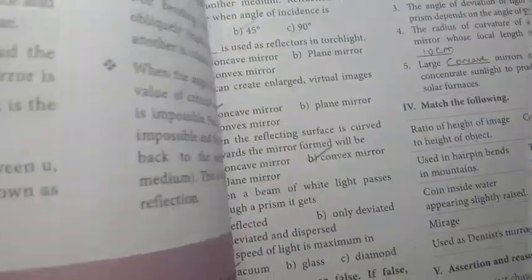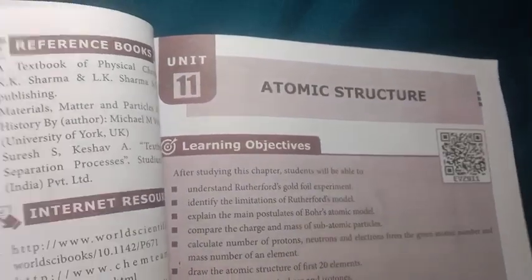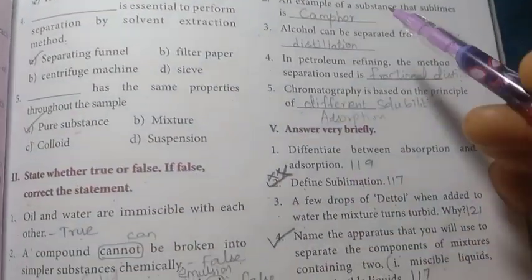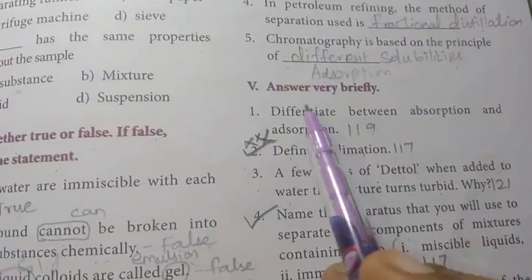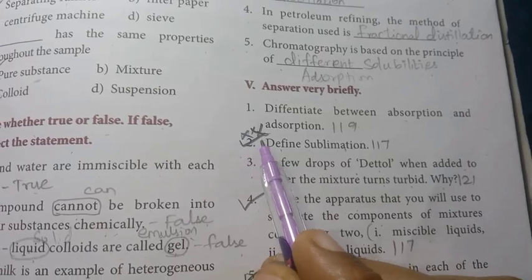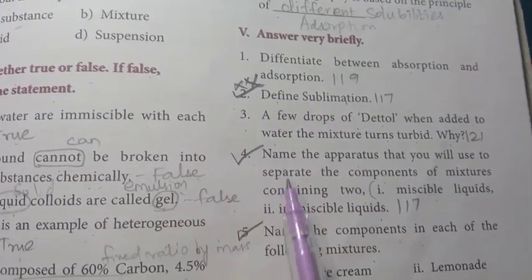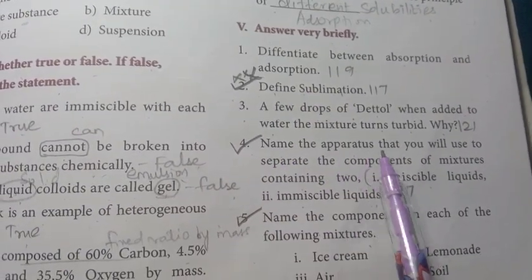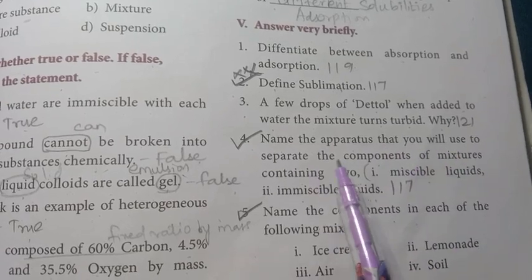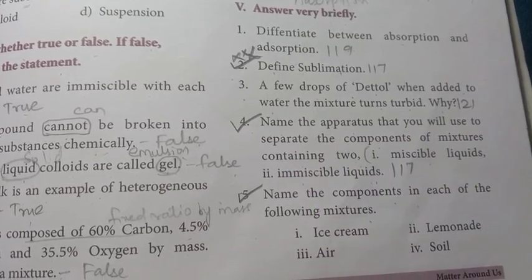Next, chemistry — Unit 10, matter around us. This is from page number 123 book back exercise, and the one-mark questions should be studied thoroughly. Under answer very briefly: define sublimation — it is a very very important question. Name the apparatus used to separate components of mixtures containing two liquids — miscible liquids and immiscible liquids.